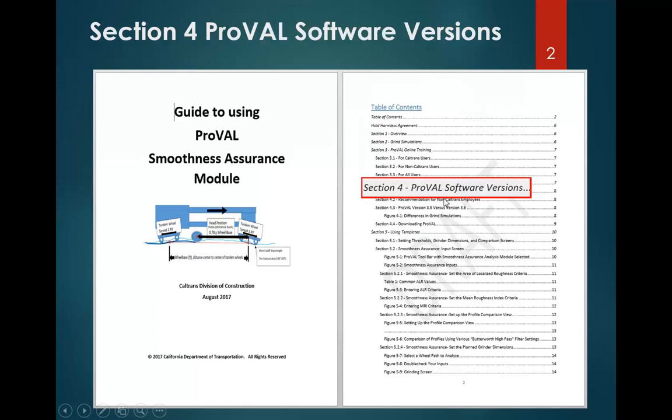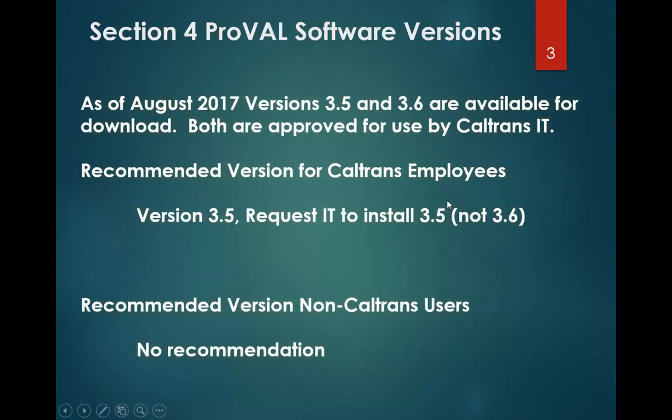Section 4 is titled ProVal Software Versions. ProVal has two versions of the software that are available: 3.5 and 3.6. Obviously 3.6 is the latest, but for Caltrans users working on hot mix asphalt projects, the official recommendation is to use version 3.5.